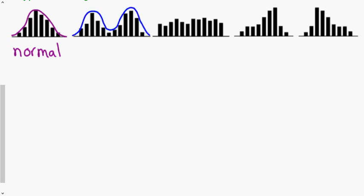The next distribution is where you have two distinct peaks on opposite sides, which means it has two different modes — we call that bimodal. If all of the bars are about the same — they don't have to be exactly the same, but generally about the same — we call that a uniform distribution.